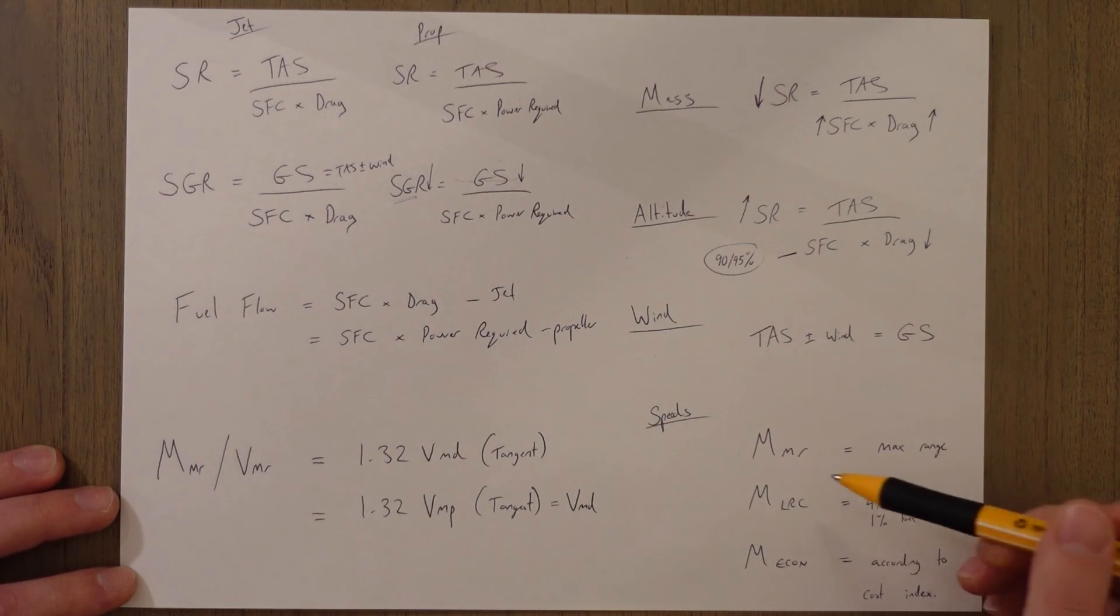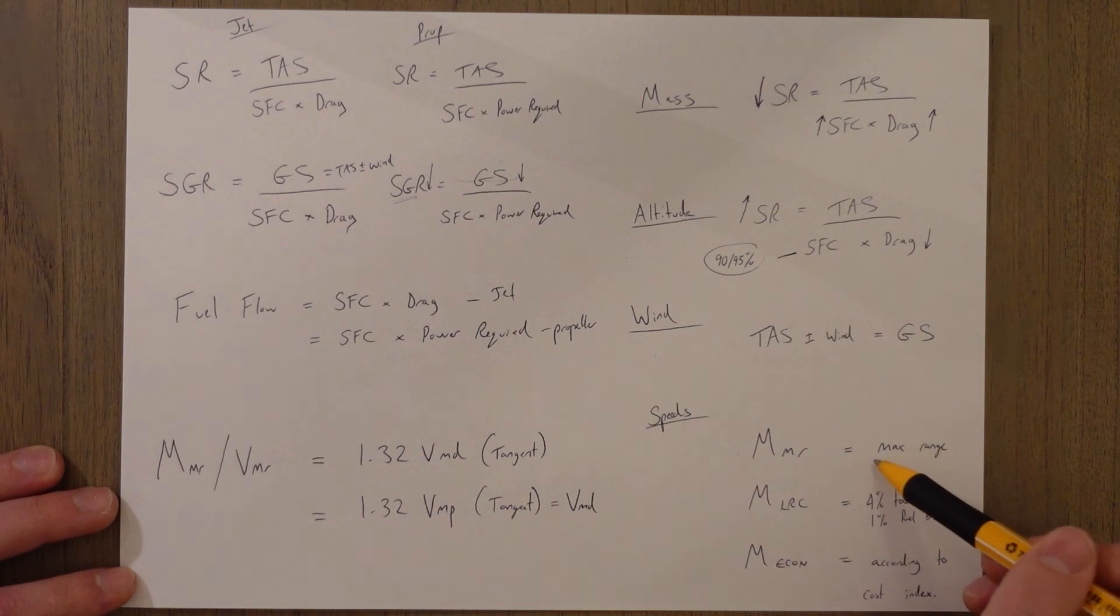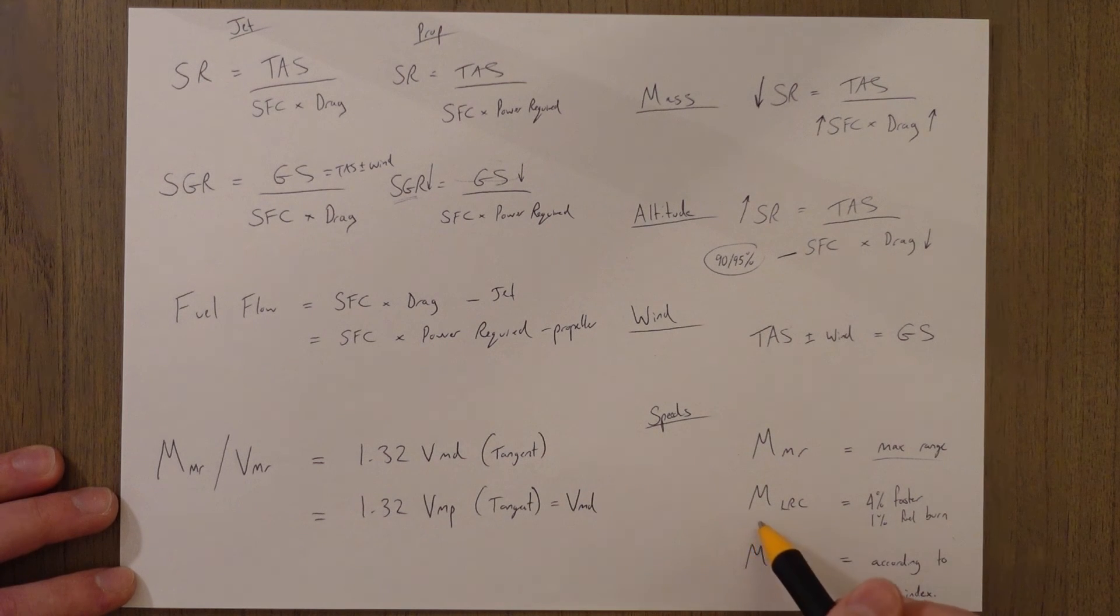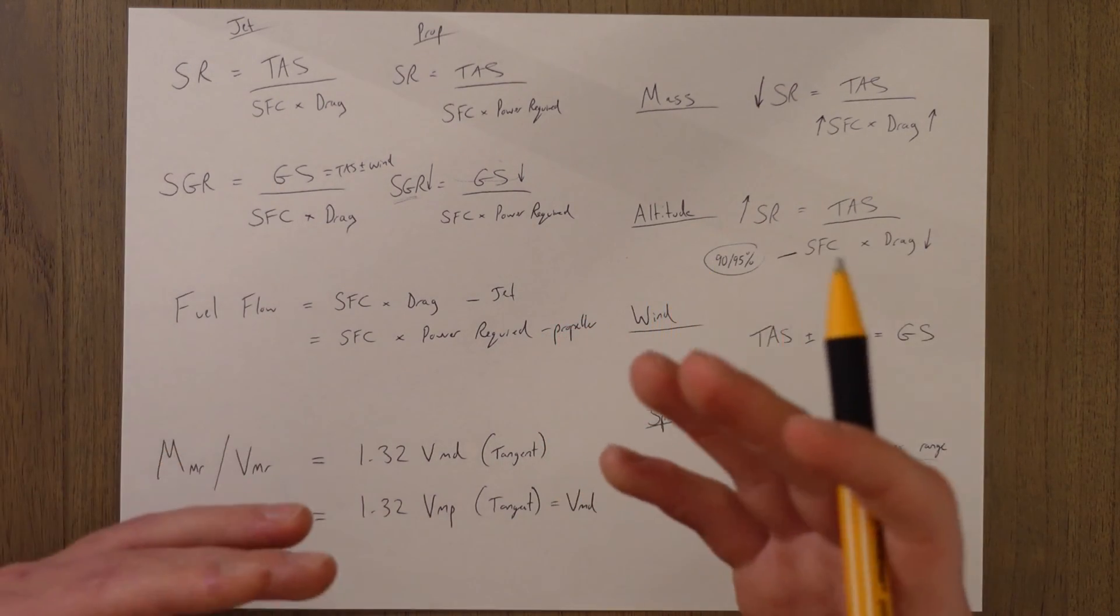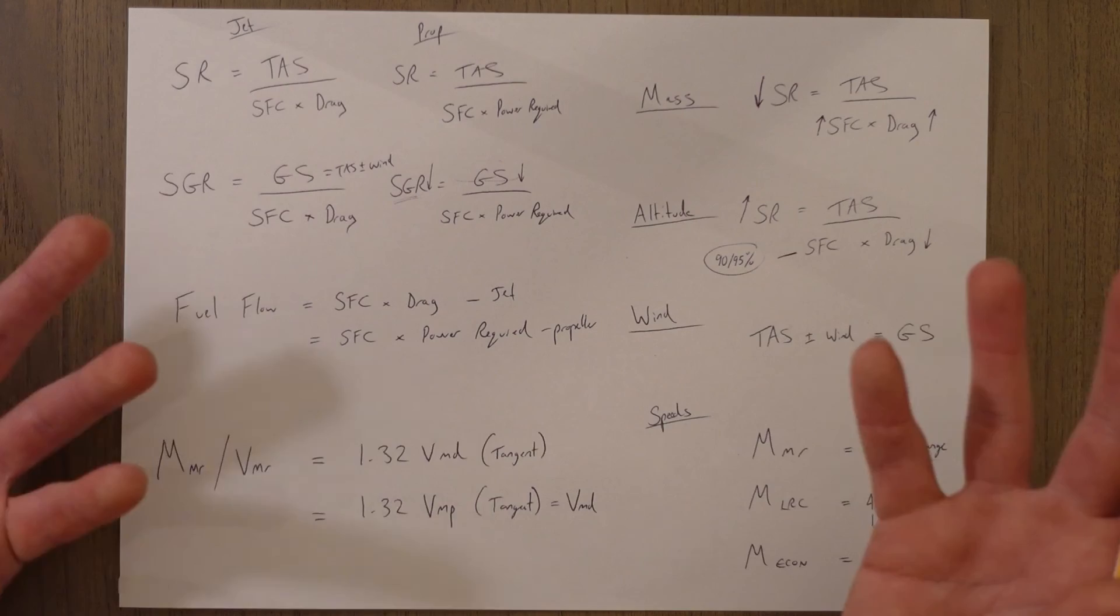The speeds that we fly - if we have MMR, we're going to fly at max range; that's going to be the best for us. And if we fly at long range cruise, we're getting 4% faster for 1% reduction in range - a bit more fuel burn. And normally we fly at MECON speed, which is according to the cost index, that range of 1 to 50, telling us how fast to fly and how much fuel to burn.